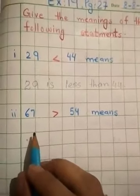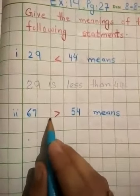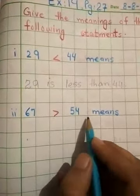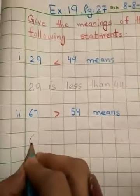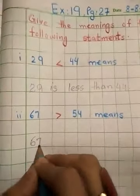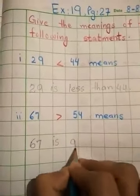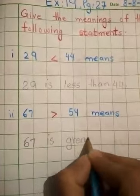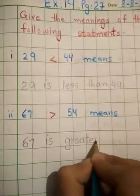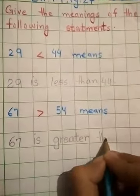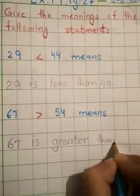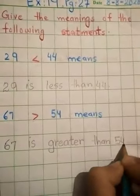Question No. 2 is, 67 is greater than 54. Then you have to write the same statement. 67 is greater than 54.